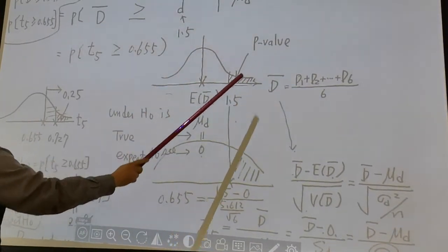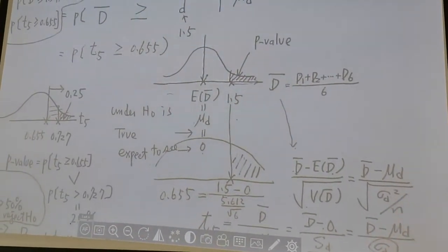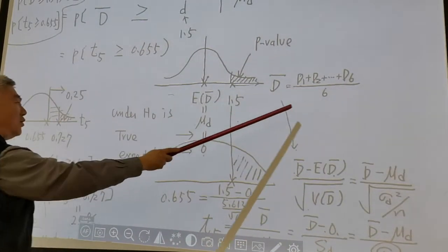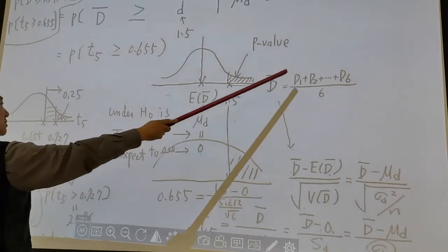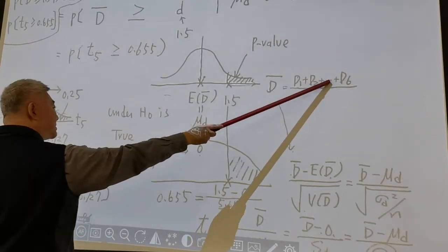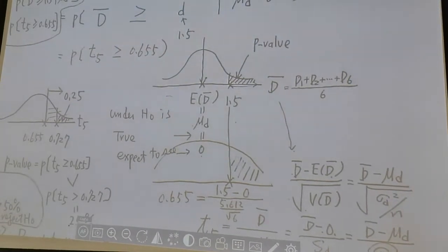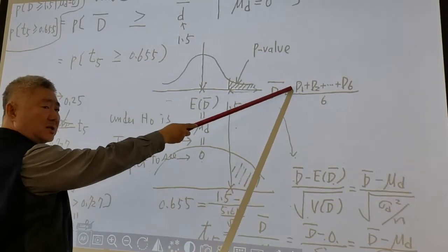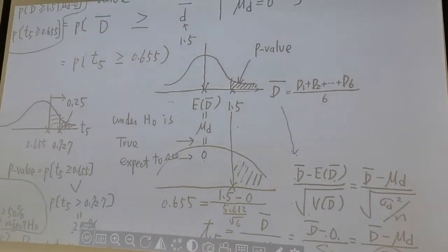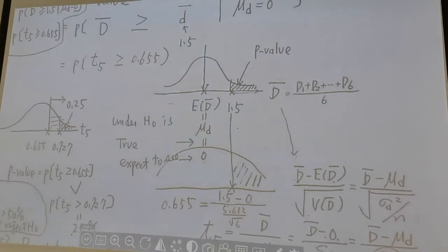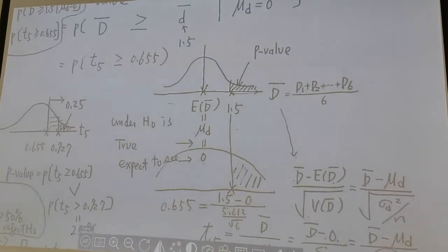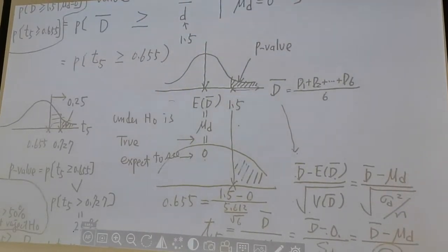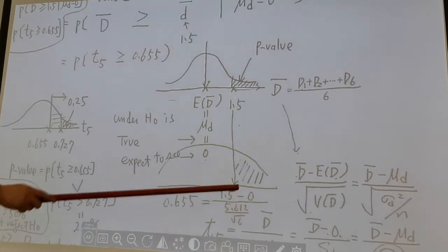D-bar follows normal not because of central limit theorem, because central limit theorem requires larger sample size. 6 is definitely too small. Why d-bar follow normal? Because we assume d₁ up to d₆ is a simple random sample from normal population. And d-bar follows normal because normality is closed under linear combination. That means normal random variable plus normal random variable will still end up with a normal random variable. And also a constant times a normal random variable, still normal. That's why d-bar is normal.